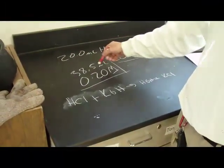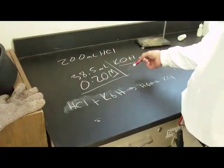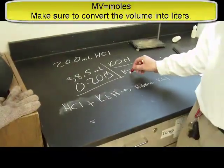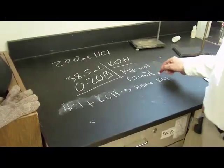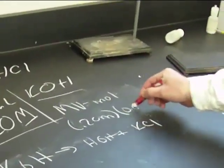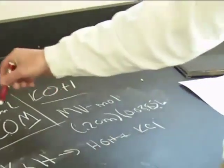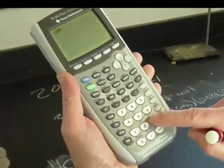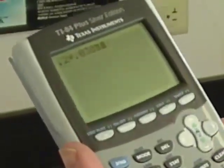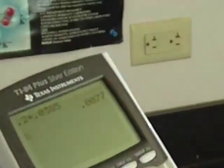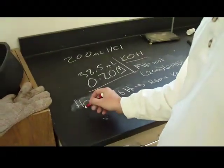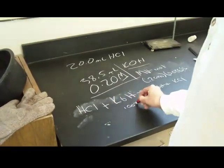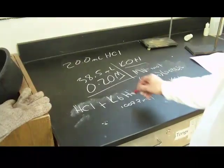Now, if you recall, we had 38.5 milliliters of 0.2 molar potassium hydroxide. So, we're going to use the equation MV equals moles. And my molarity was 0.20 molar. My volume was 0.0385 liters. Now, remember, this is milliliters. This is liters. So, I'm going to get my calculator on here. So, I'm going to say 0.2 times 0.0385. And I get 0.0077. So, on the table here, I'm going to say 0.0077 moles of KOH.